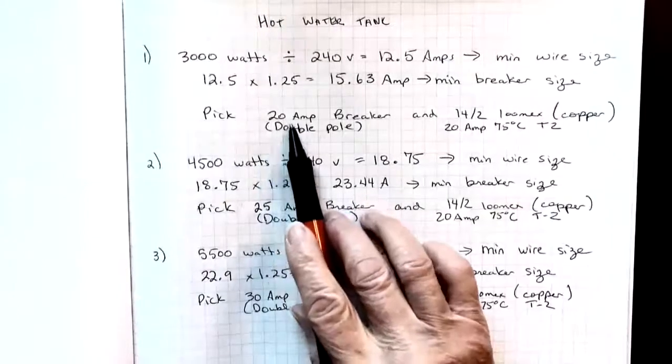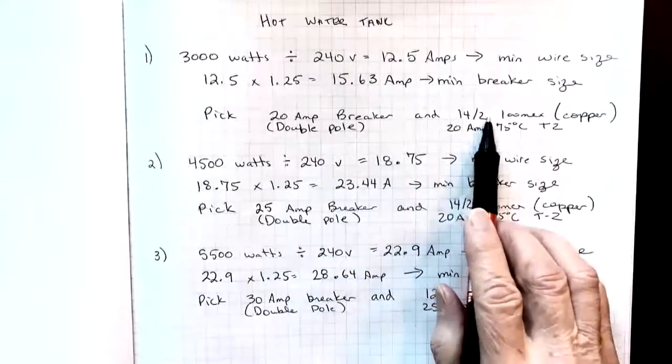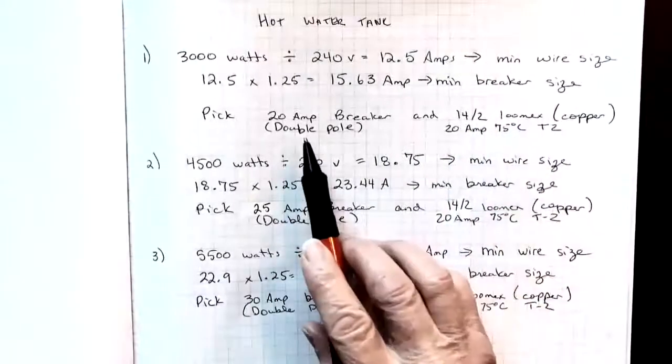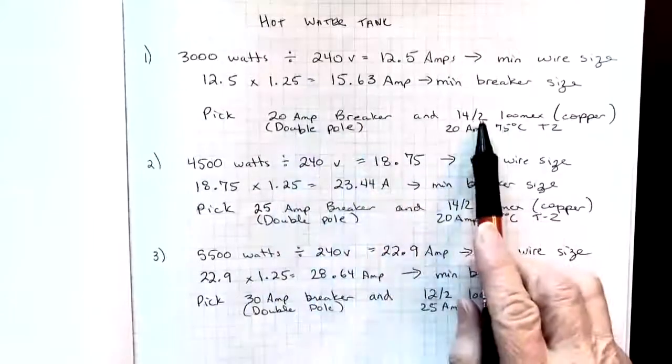So we pick a 20 amp breaker and the 14.2 Lumex when we're using copper. It's a double pole breaker because of the 240 volts.